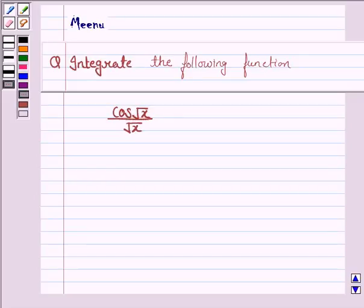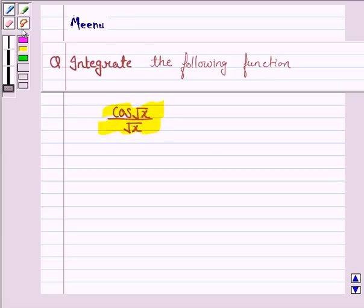Hello friends, let's work out the following problem. It says integrate the following function. The given function is cos(√x) / √x. Let us now proceed with the solution.